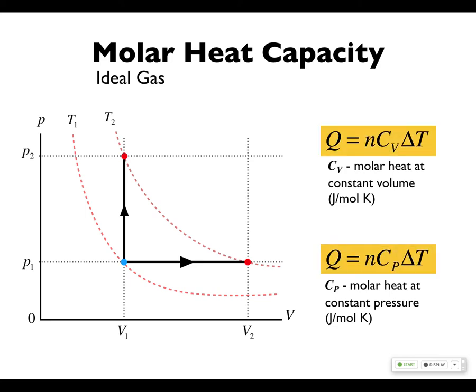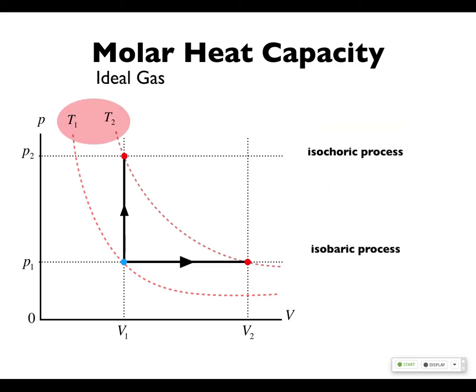What this says is there's two different ways to go from one temperature to another. Actually, there's more than two, but there's two that we get nice calculations for the heat. Because you could draw any line that goes from this isotherm to this isotherm as long as you can create it in physical reality. Those will all have the same change in temperature, but they won't all have the same change in heat.